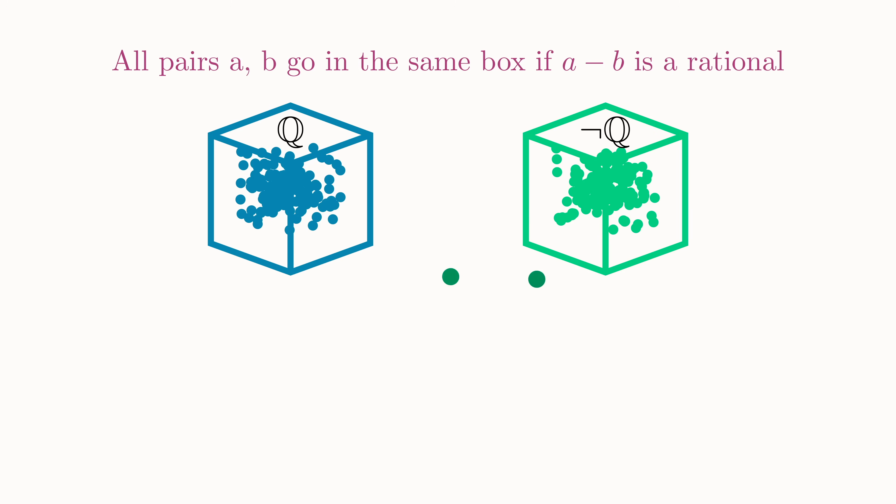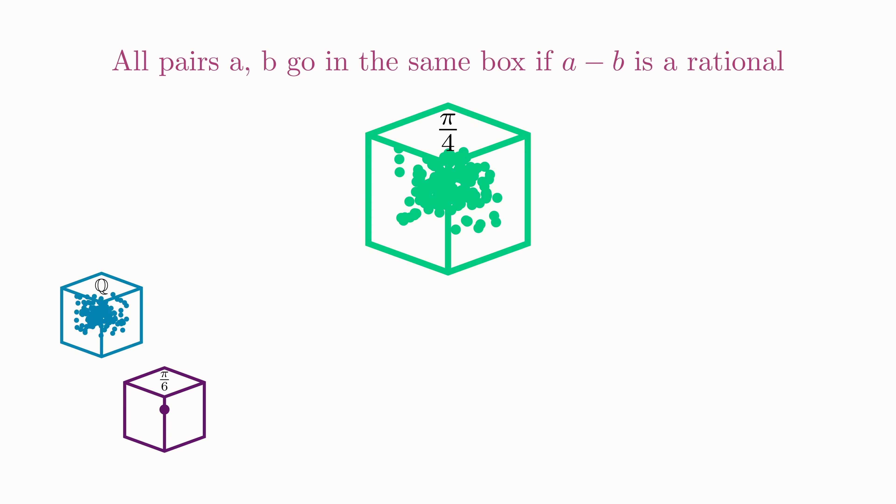Now let's consider pairs of numbers in the green box. Applying our rule now, we'll keep pi over 4 in the green box, but we'll move pi over 6 to a new box. These new labels will make more sense in just a few moments. We will set the blue and purple boxes to the side for now, and continue focusing on the green. Now let's consider pi over 4 again. And in addition, pick out pi over 4 plus 1 half. If you subtract these, the difference is negative 1 half, which is rational. So pi over 4 and pi over 4 plus 1 half, both stay in this box.